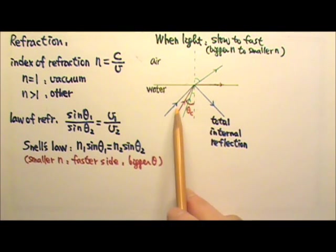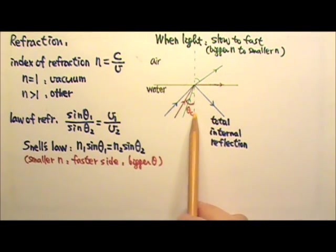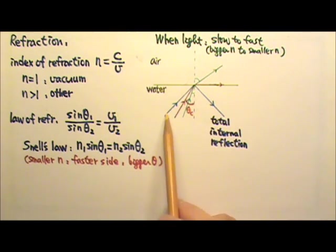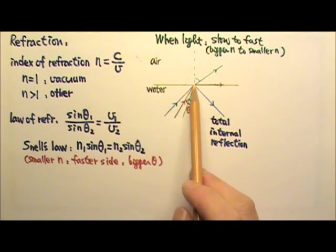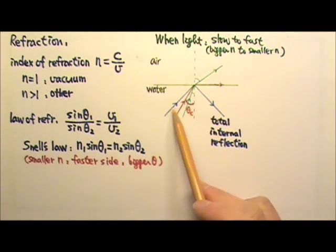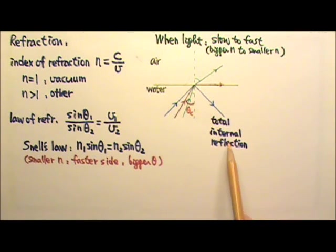If we keep increasing the angle of incidence beyond the critical angle, what happens is that no light will get out into the air. All of the beam is going to get reflected. So this is what we call total internal reflection.